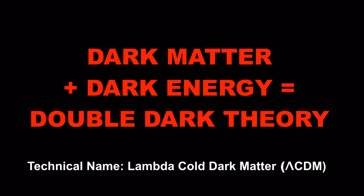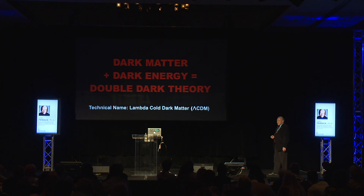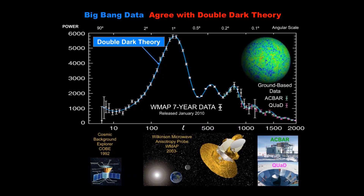Lambda was the Greek letter that Einstein used to represent the simplest form of dark energy, which is a cosmological constant. And cold dark matter is a term I introduced back in 1983 for this stuff that is most of the matter in the universe. Now, why would anyone believe that this is true — that most of the universe is invisible?